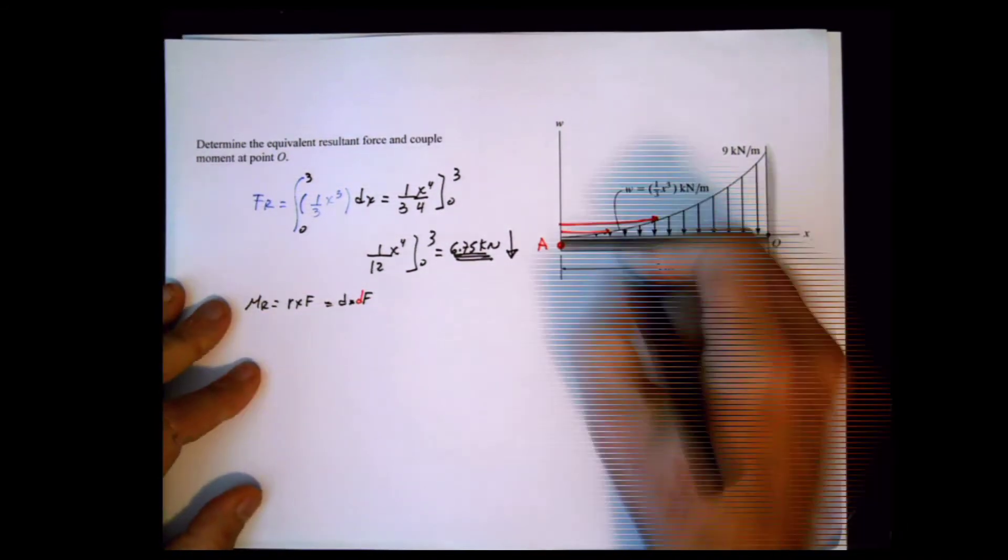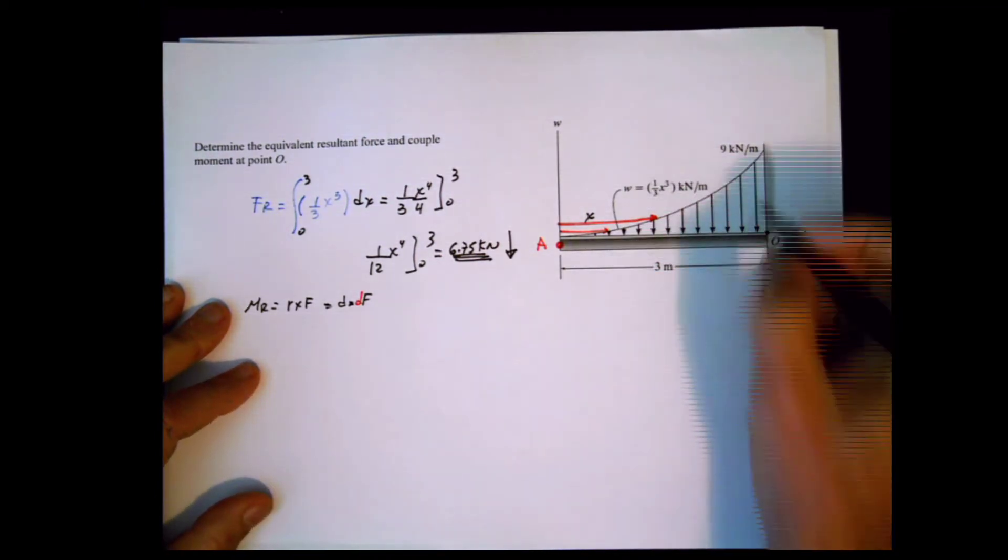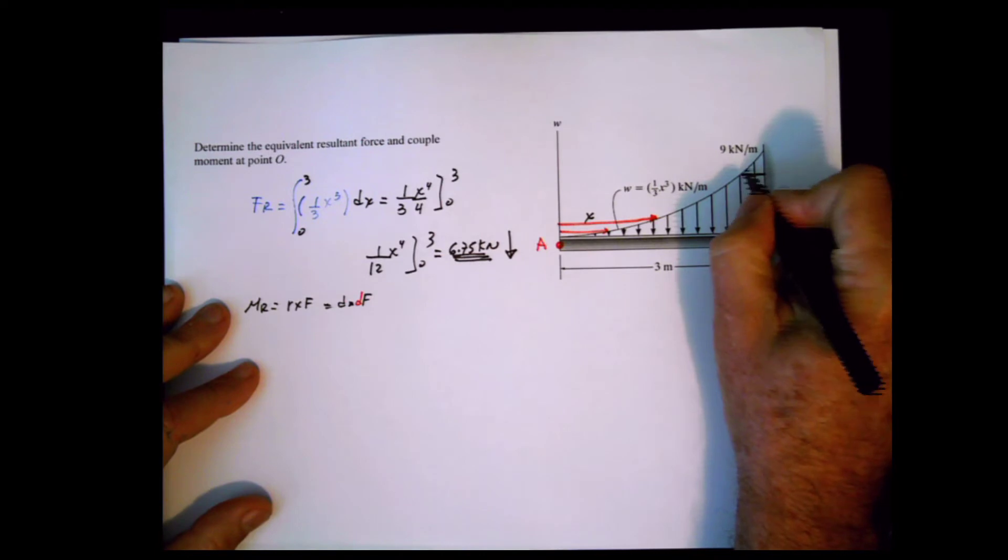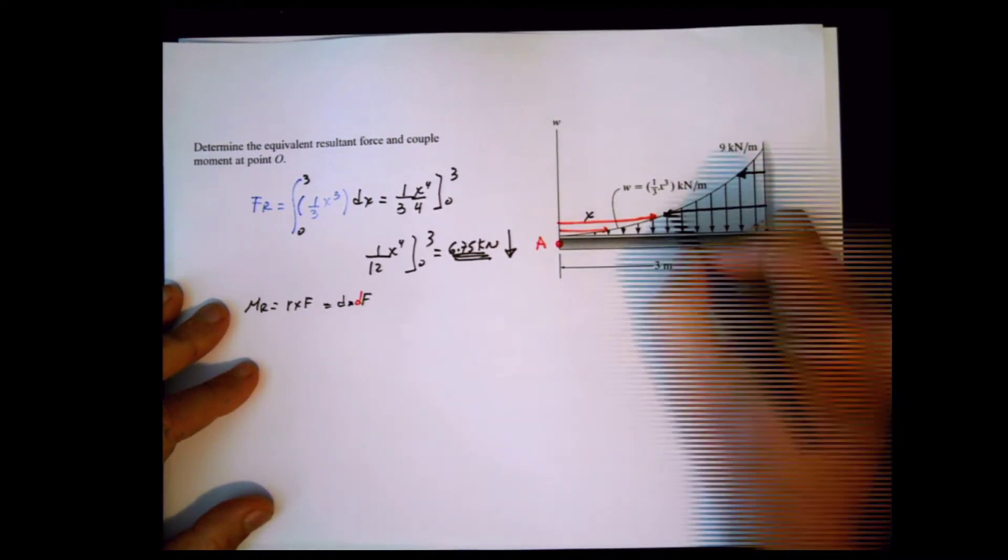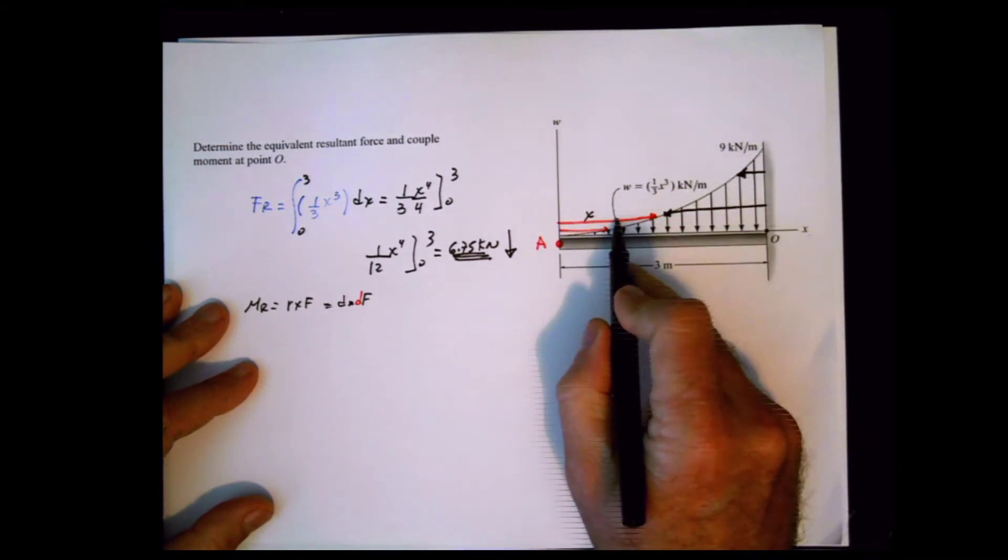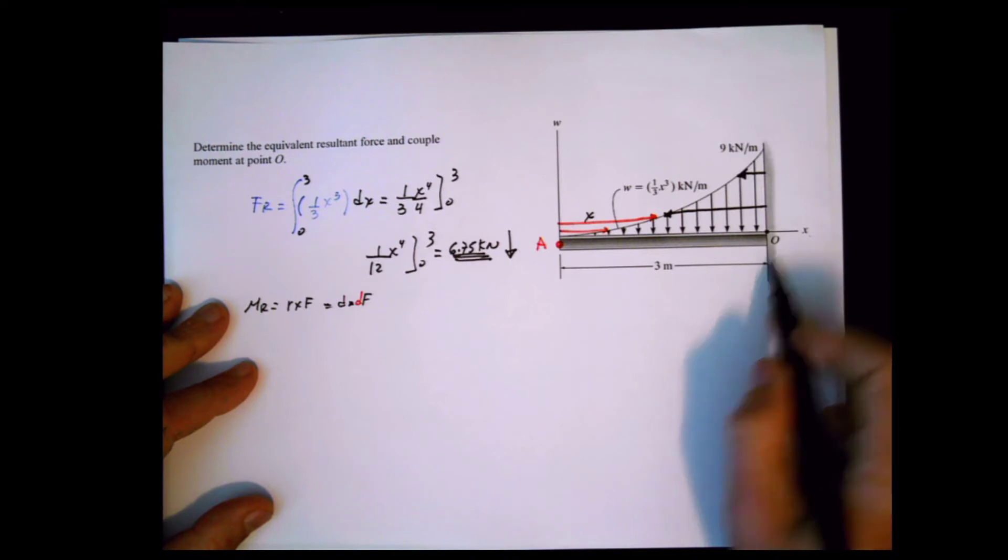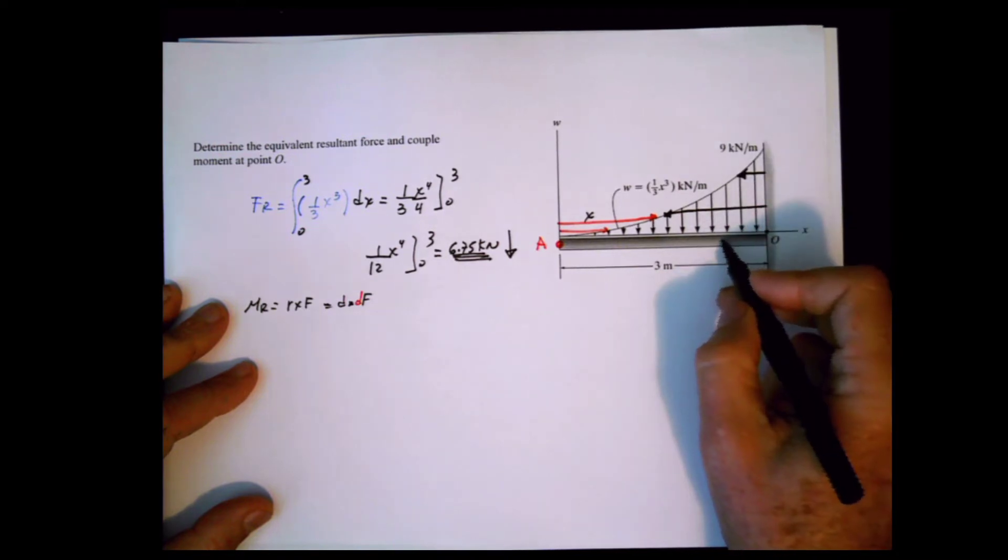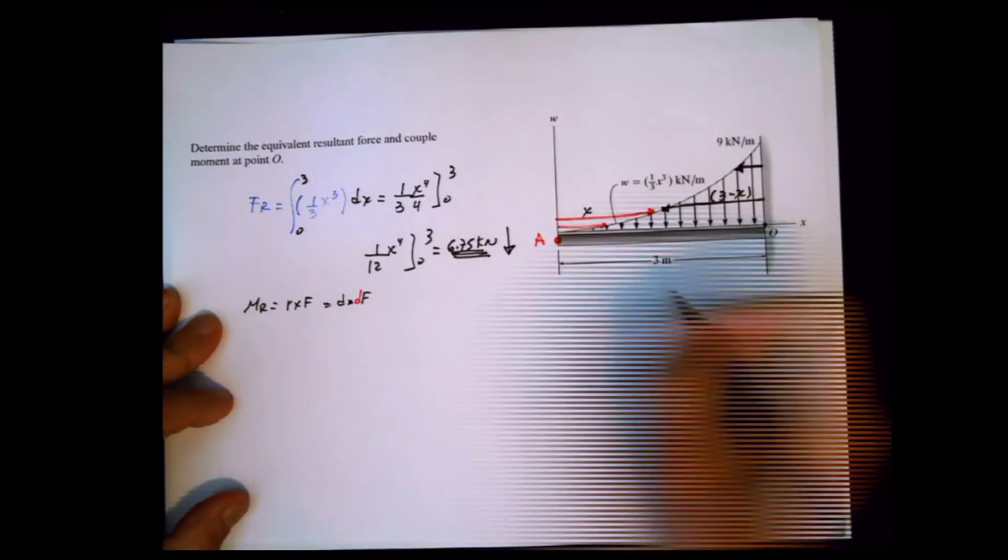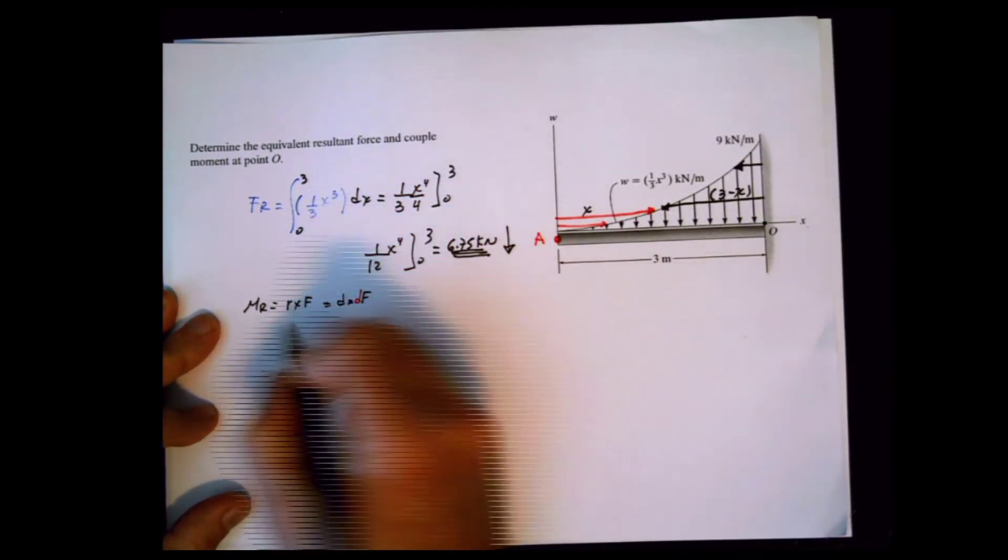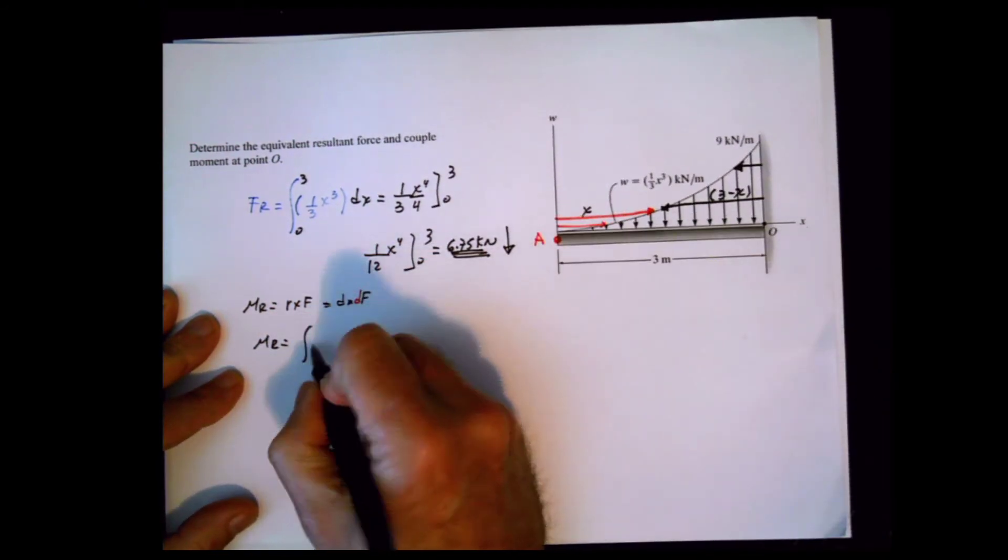However, in our case we measure from this end. If the total distance is 3, then at any point the distance is 3 minus x.